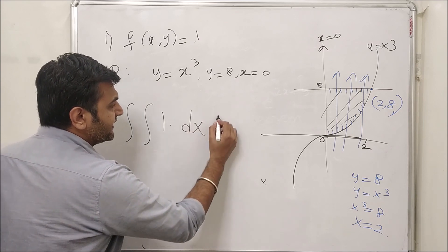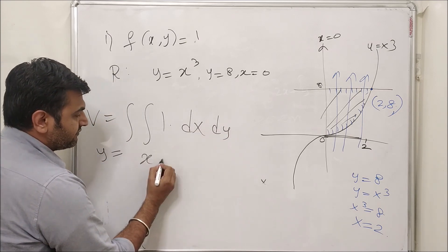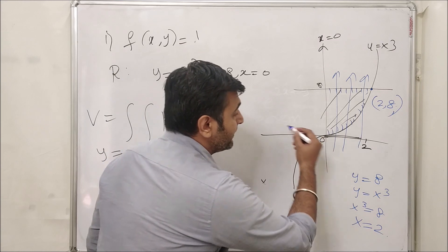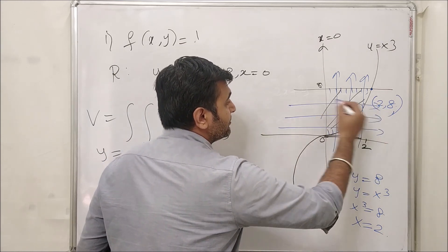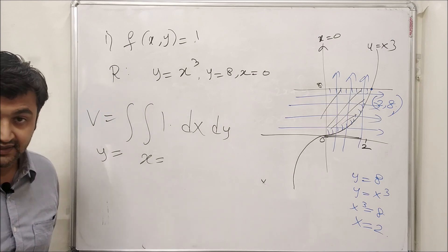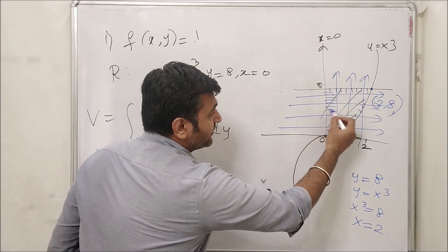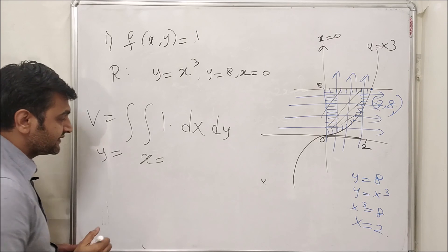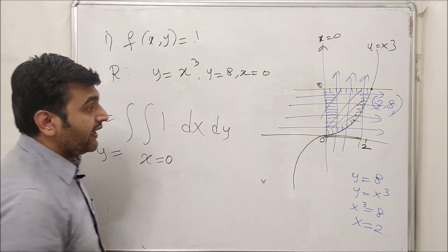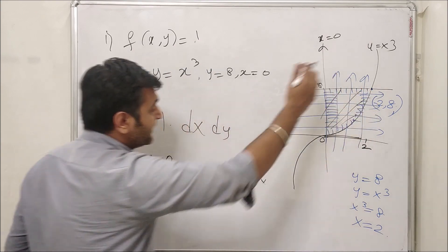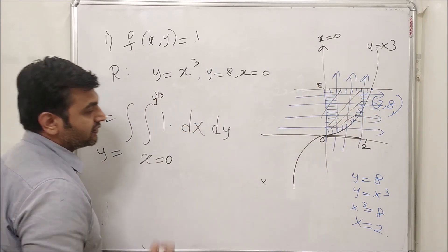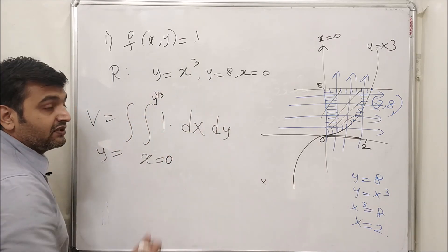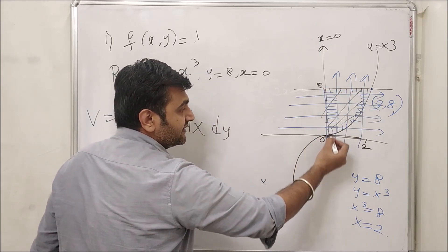For the order dx dy, y is outside and x is inside. To find the limits of x, draw a line parallel to the x-axis and see where it enters and leaves the domain. It enters from the y-axis, where x is always 0, and it leaves from the curve y = x³. Solving for x gives x = y^(1/3). To find the limits of y, project the region onto the y-axis, which gives y going from 0 to 8.